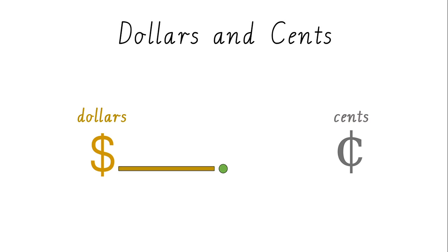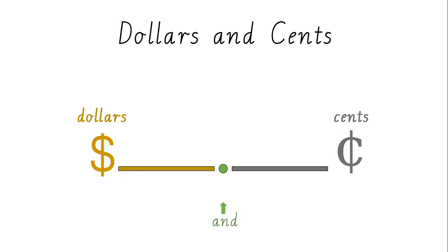We write our dollars on the left side of the decimal point. We write our cents on the right side of the decimal point. When we read out a money amount, we use the word 'and' when we see the decimal point.